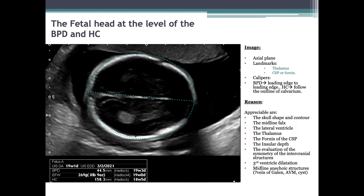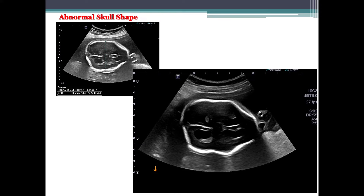The fetal head at the level of the BPD and head circumference: in a true axial plane, the biparietal diameter should be measured at the level of the thalamus demonstrating midline falx and the CSP. This one image depicts a plethora of anatomical structures that must be evaluated, including skull shape and contour, midline falx, lateral ventricles, thalamus, fornix of the CSP, insular depth, symmetry of intracranial structures, any third ventricle dilatation, and midline anechoic structures — thinking about vein of Galen, arteriovenous malformations, or cysts. Here we have an example of an abnormal skull shape seen in a fetus with a significant neural tube defect.